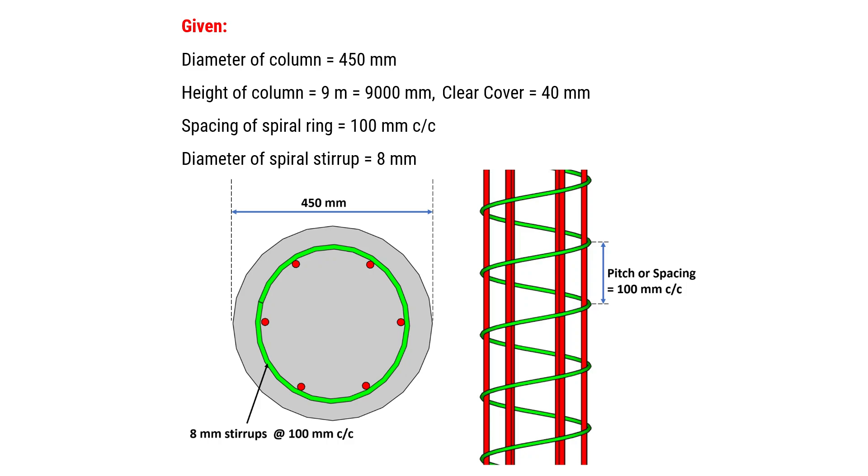Clear cover is 40 mm. Spacing or pitch of spiral rings is 100 mm center to center. The diameter of spiral stirrups is given as 8 mm.